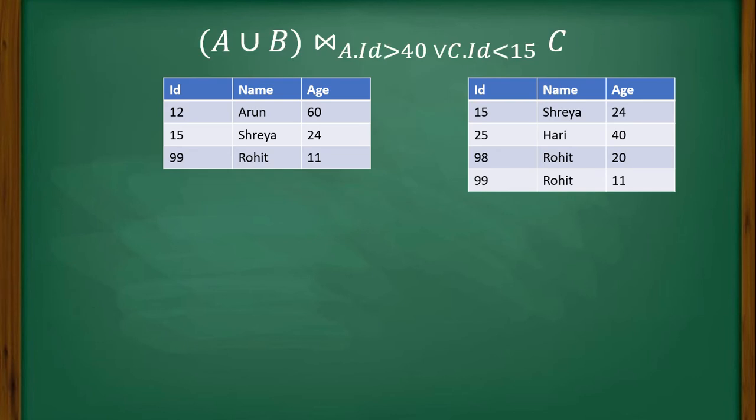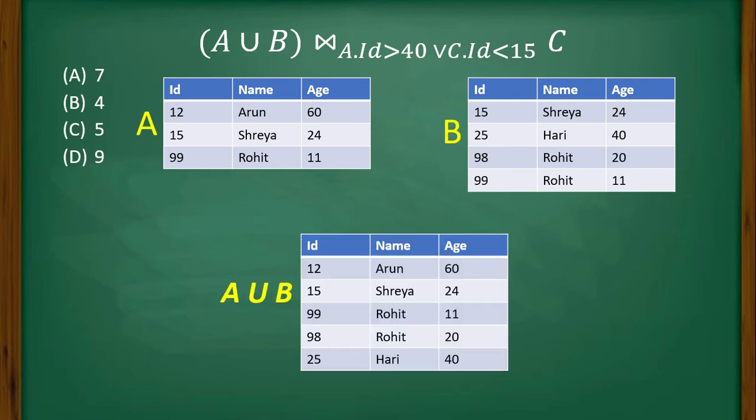Here we have these two tables, table A and table B. Now if we do union, the first part is union. We know that union of two tables needs the condition that both tables must have the same schema, same number of columns, and these columns must have the same domain. So they are satisfying. You can see the common things are entered for one time, like 99 Rohit 11 is entered for one time. This is what happens as a result of union.